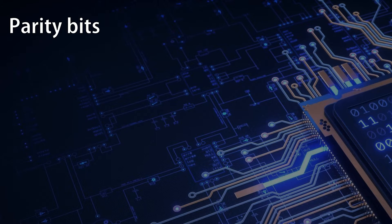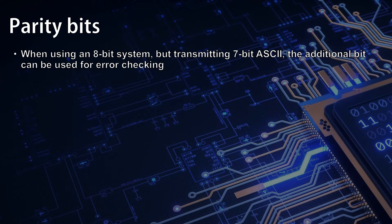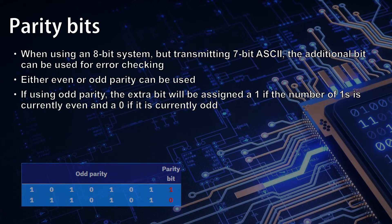When using an 8-bit system but transmitting 7-bit ASCII, the additional bit can be used for error checking as a parity bit. Either even or odd parity can be used. If you're using odd parity, the extra bit will be assigned a 1 if the number of 1's is currently even, and a 0 if it's currently odd, to make sure that we always have an odd number of 1's.